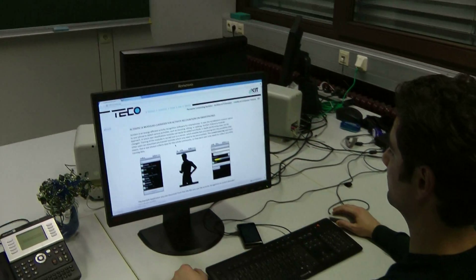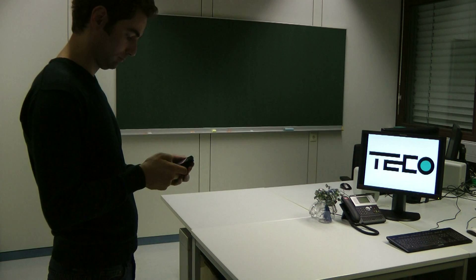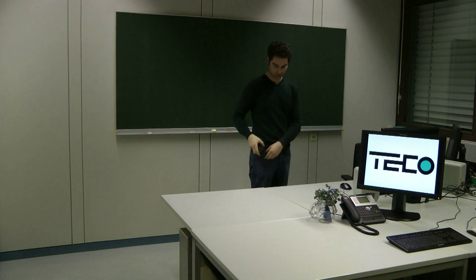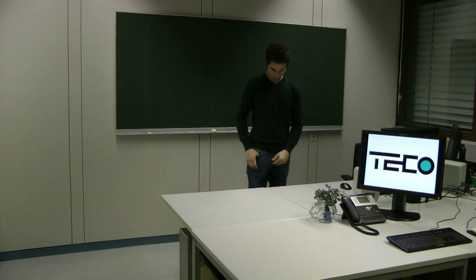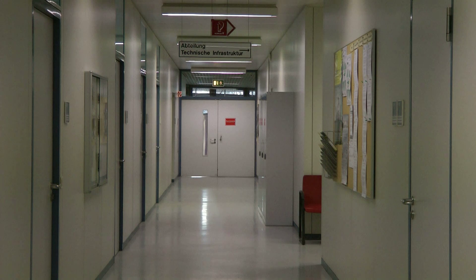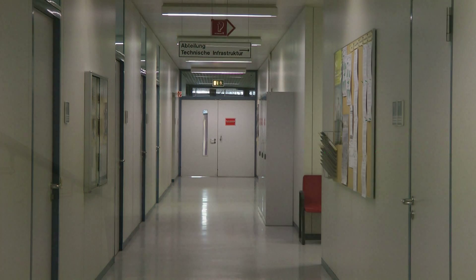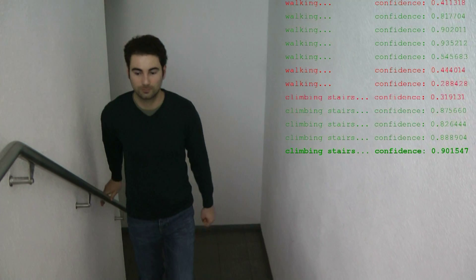After downloading and installing ActiServe, a set of standard activities can directly be recognized with average accuracy. In order to improve this, the user personalizes the recognition system by performing each of the activities such as standing, sitting, walking or running for two to three minutes. After this one-time personalization step, an appropriate bit vector is transmitted to the phone and ActiServe recognizes the trained activities with high accuracy.